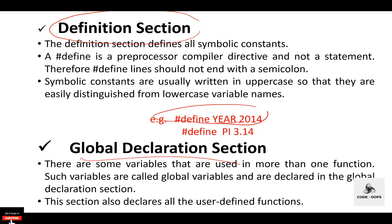The global declaration section includes all global variables, function declarations, and static variables. The variables declared in this section can be used anywhere in the program — they are accessible to all functions, which is why they are known as global variables. Local variables are those declared inside the main function, while global variables are those declared outside the main function.